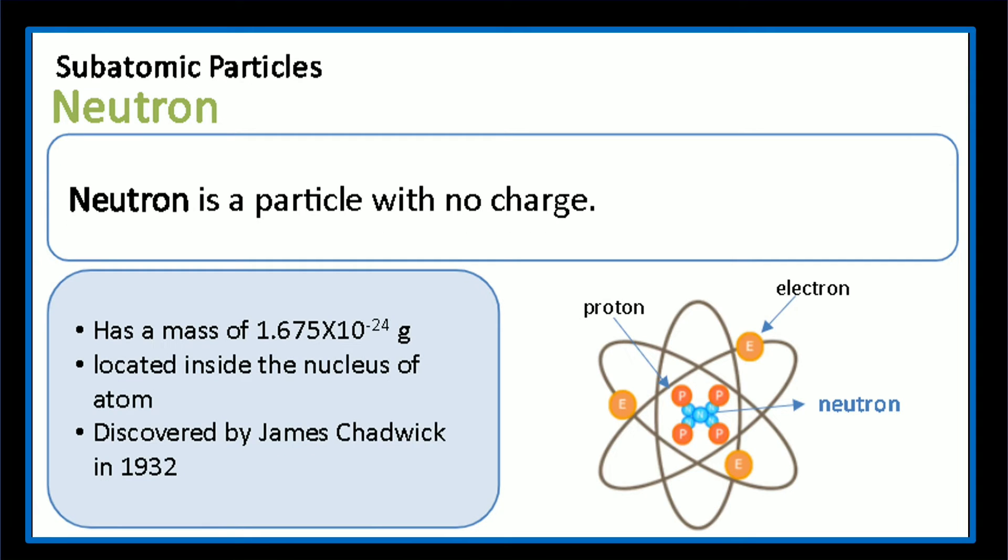A neutron is a particle with no charge. It has a mass of 1.675 times 10 raised to negative 24 grams, which is greater than the electron's mass. It is located inside the nucleus of an atom. It was discovered by James Chadwick in 1932.